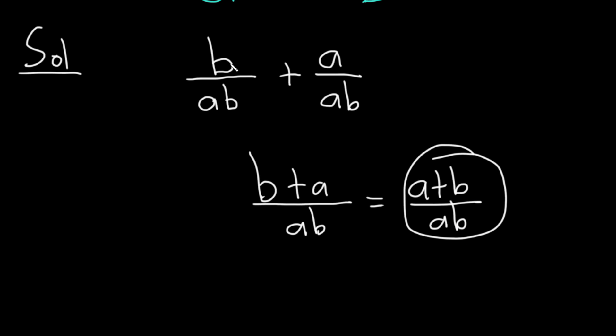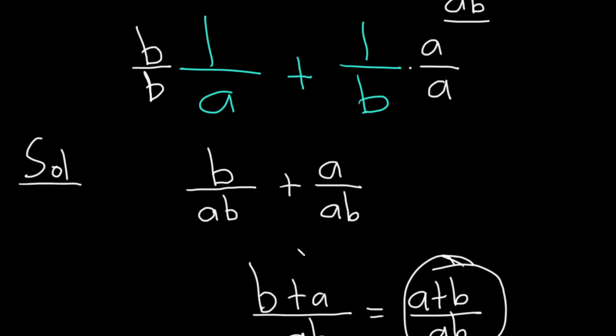Or you can leave it as b plus a over ba. It doesn't matter. But both are good. And that is it. That is how you add these two fractions, 1 over a plus 1 over b. I hope it's been helpful. Take care.